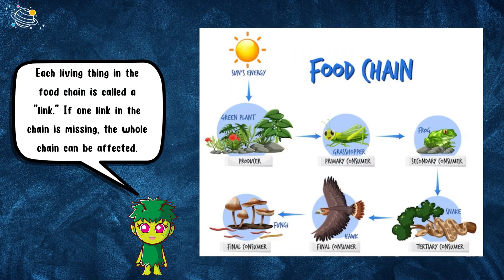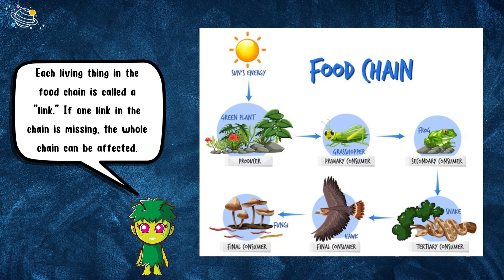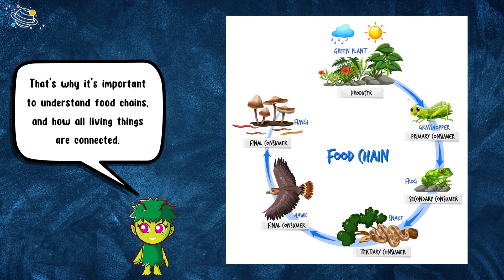Each living thing in the food chain is called a link. If one link in the chain is missing, the whole chain can be affected. That's why it's important to understand food chains and how all living things are connected.